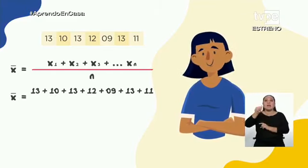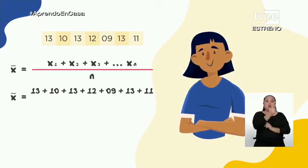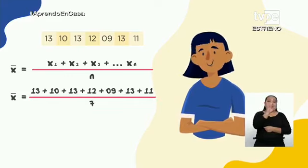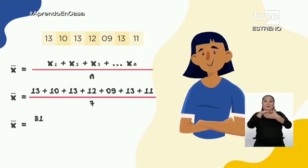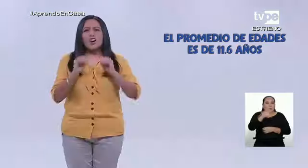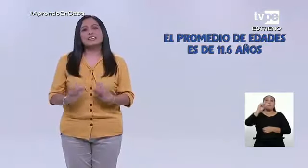Sumamos 13, 10, 13, 12, 9, 13 y 11. En la parte inferior colocamos la cantidad total de datos, es decir, dividimos entre 7 edades. Después de operar obtenemos 81 entre 7, lo que nos da un resultado de 11,6. ¡Listo! Ya tenemos la respuesta. Nuestro promedio de edades es de 11,6 años.